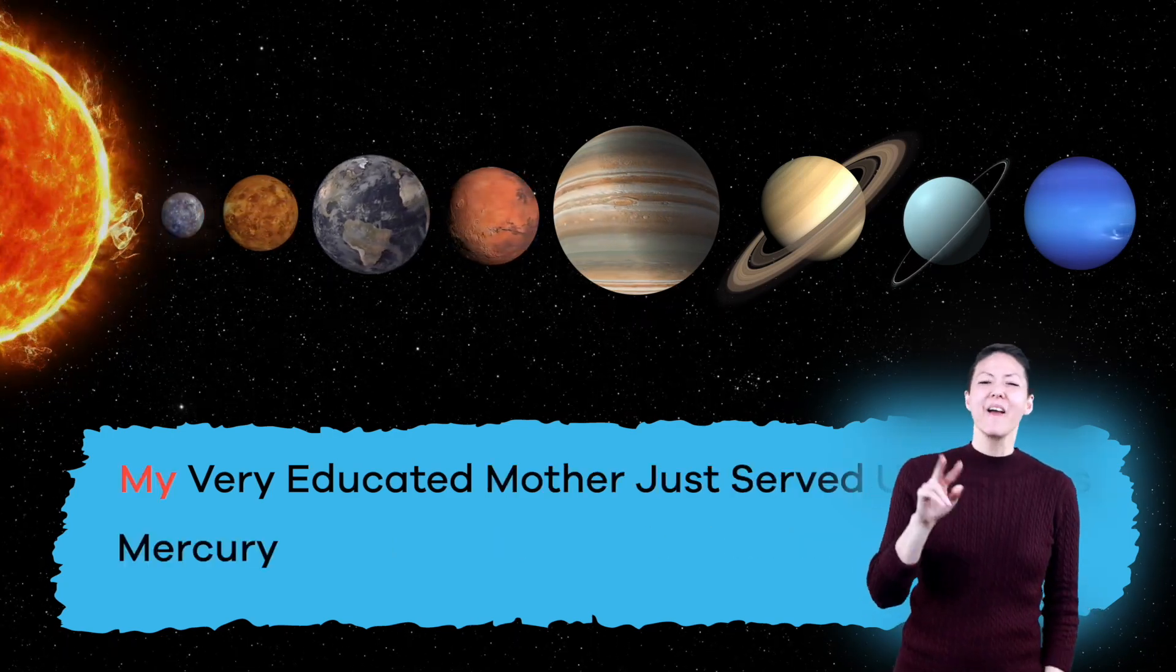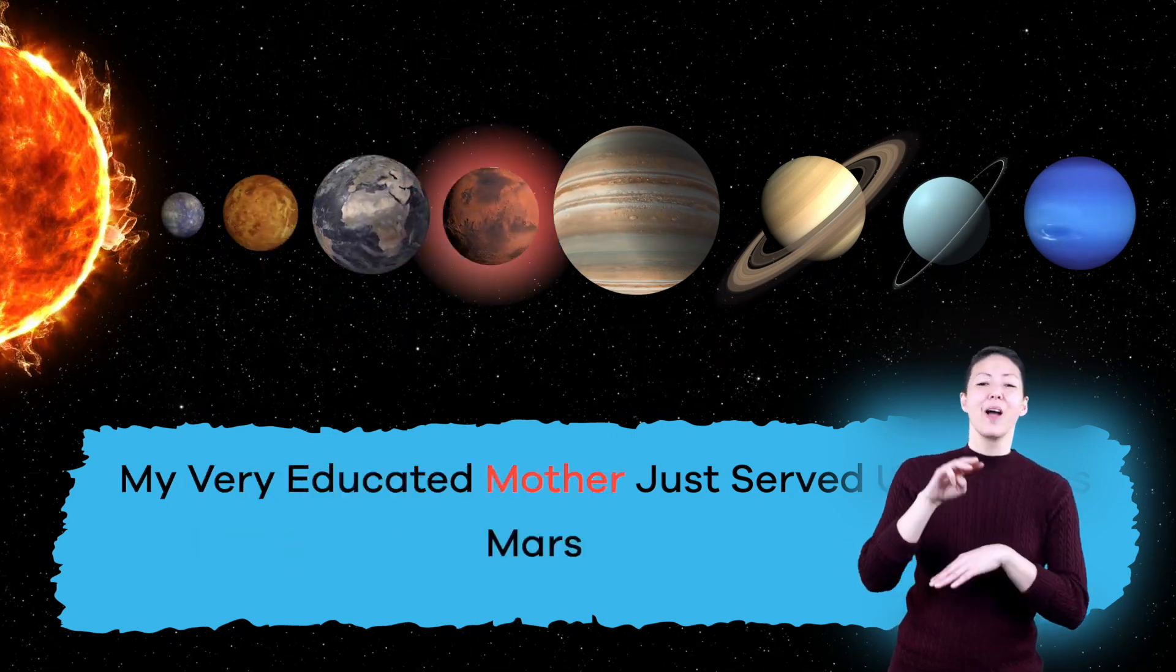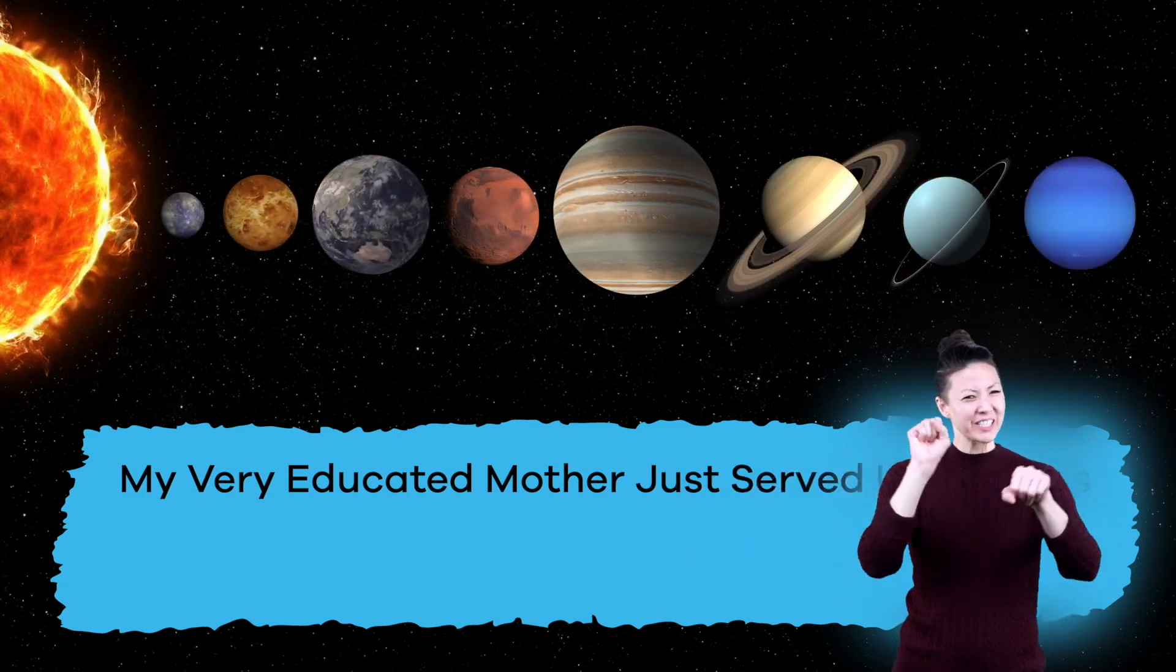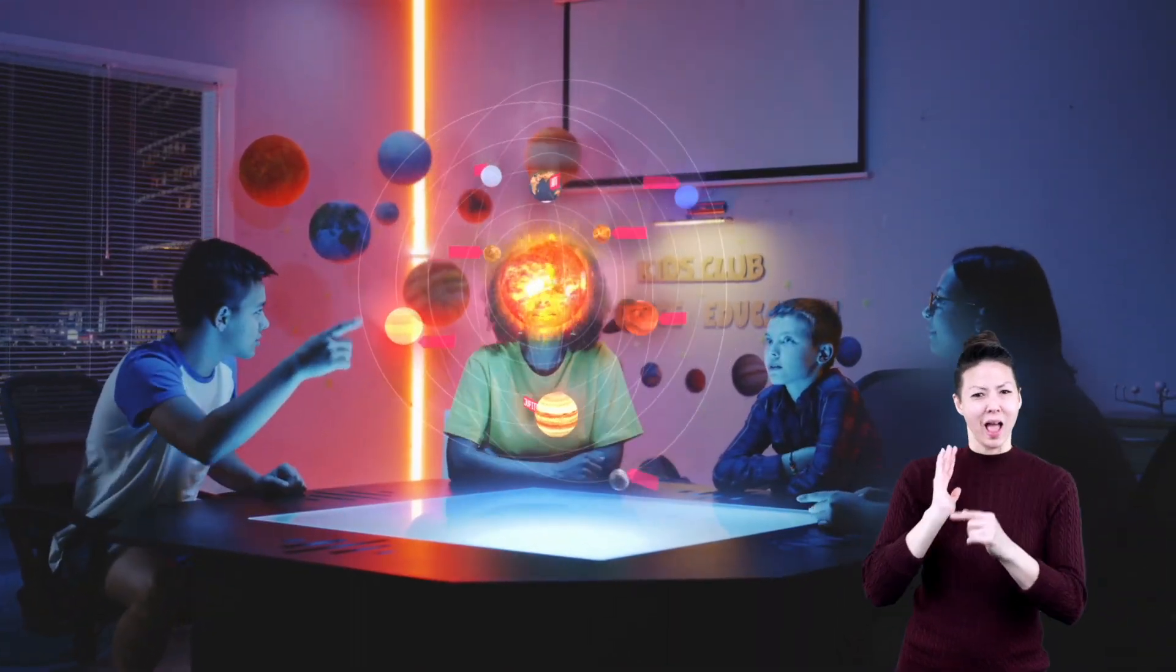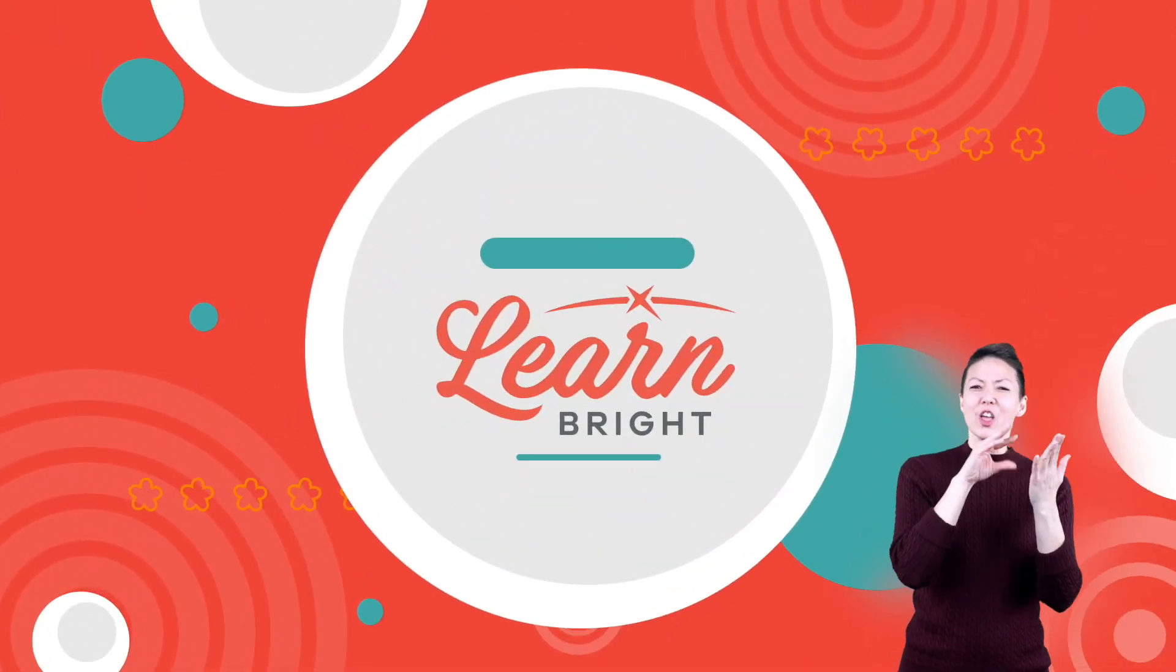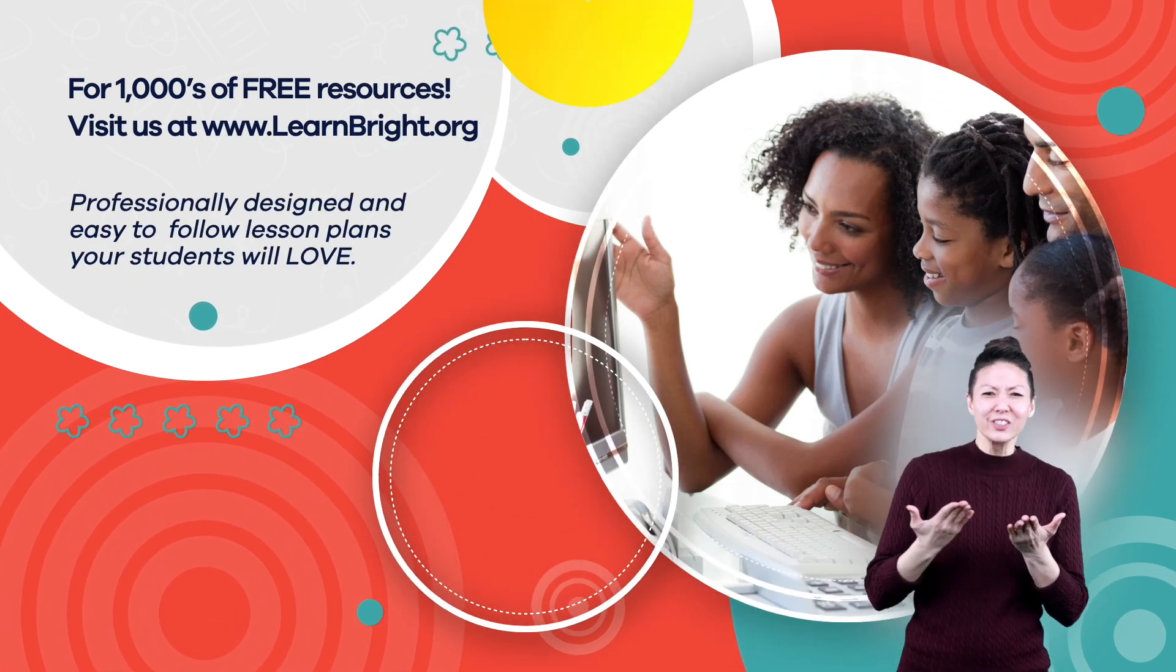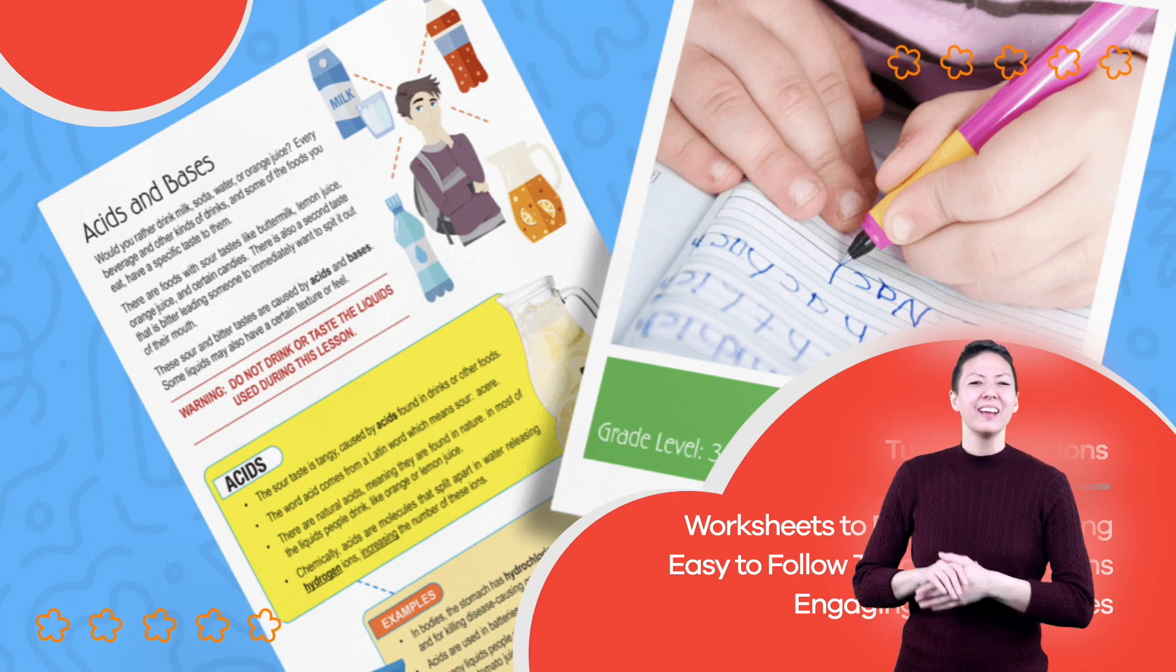Mercury, Venus, Earth, Mars, Jupiter, Saturn, Uranus, Neptune. Great job! We hope you had fun learning about the eight planets in our solar system. Hope you had fun learning with us. Visit us at learnbright.org for thousands of free resources and turnkey solutions for teachers and homeschoolers.